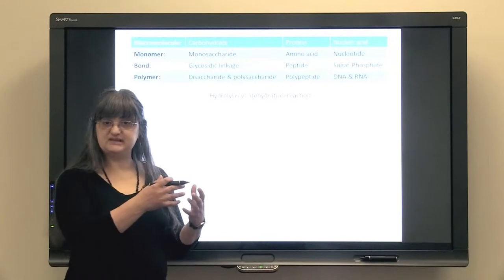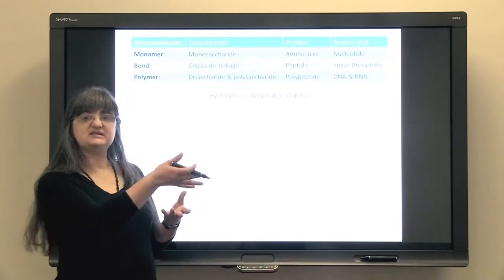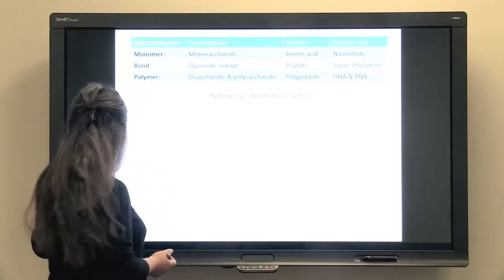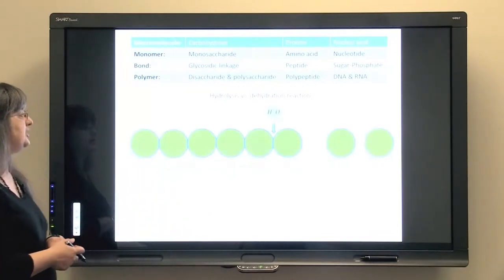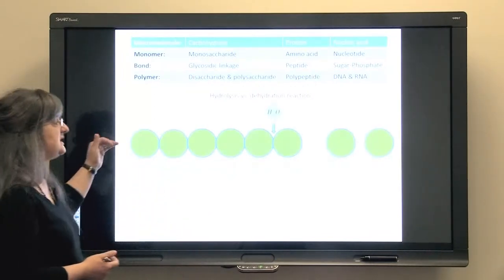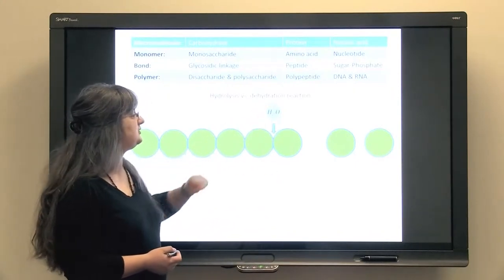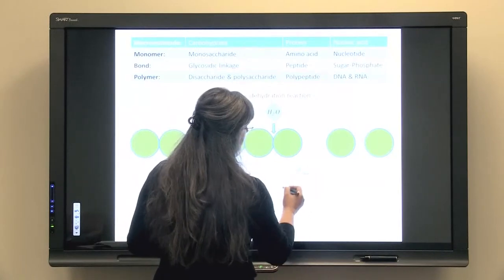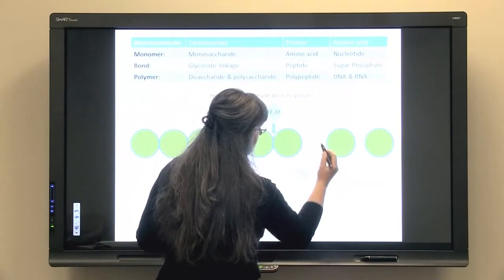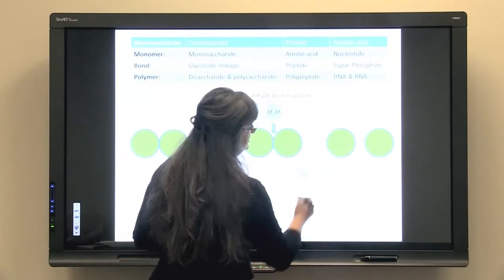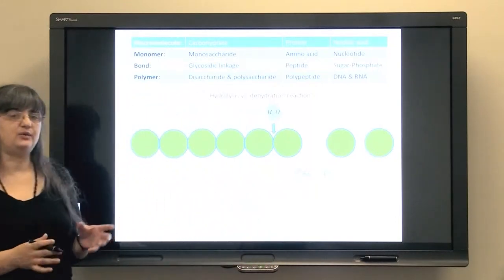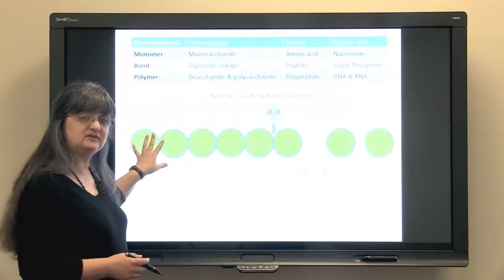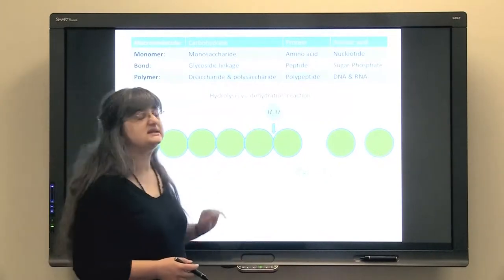To separate something, we need to introduce the same molecule of water. That would be hydrolysis, or breaking down by water. We are introducing one molecule of water which will take OH to one molecule, and the other monomer will receive H. Now we have separate monomers, separate units, and the remnant of the polymer. That is hydrolysis.